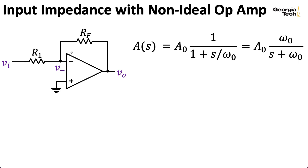I'm still going to assume that we have infinite input impedance on the original op amp, so no current is flowing through the inputs. I'm also going to assume that we have zero output impedance, so our voltage output is a perfect voltage source. You can tweak our analysis to include these effects and wind up with more complicated formulas, but I don't think the resulting formulas are that illuminating, so I won't get into that kind of analysis here.